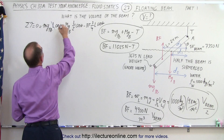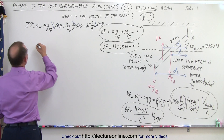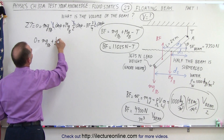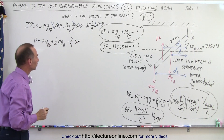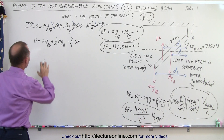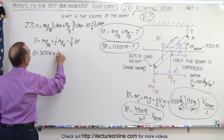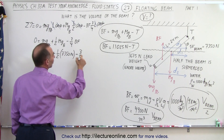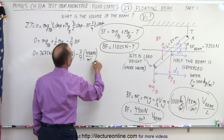Notice that all terms have L and cos(θ), so those cancel out. The simplified equation is: 0 = Mg_lead + (1/2) Mg_beam − (3/4) F_b. Plugging in numbers: 0 = 3675 Newtons + (1/2)(7350 Newtons) − (3/4)(4900 Newtons per cubic meter)(V_beam). Combining the first two terms gives 7350 Newtons, and three-quarters of 4900 is 3675 Newtons per cubic meter, so: 0 = 7350 − 3675 V_beam.